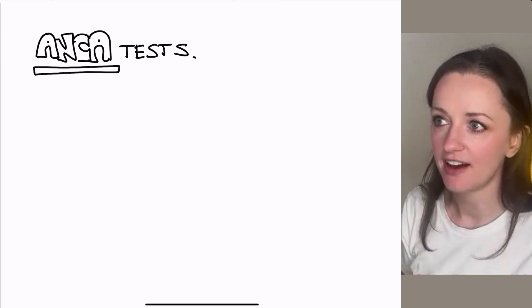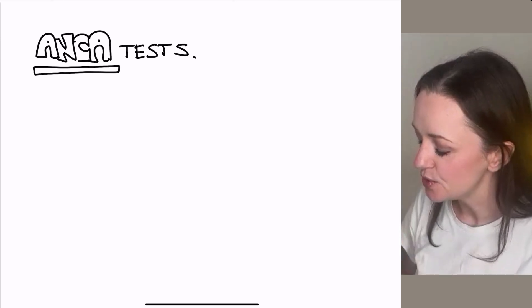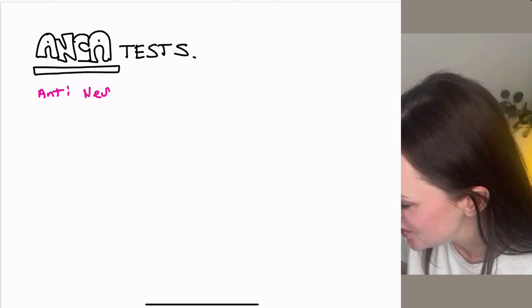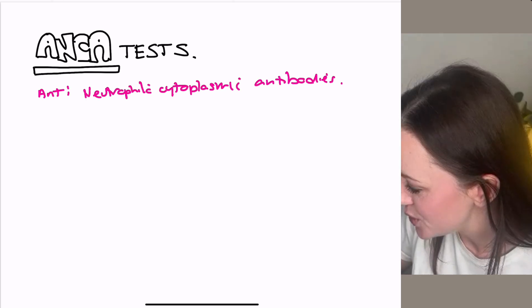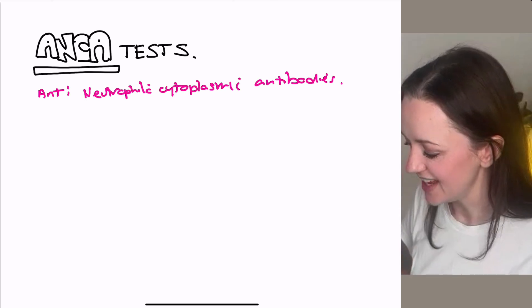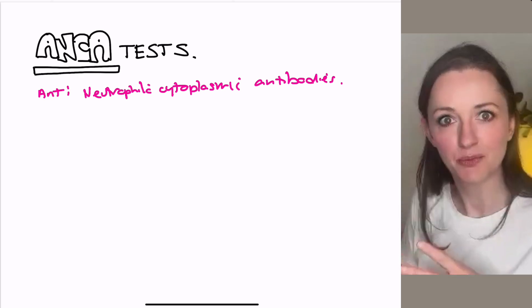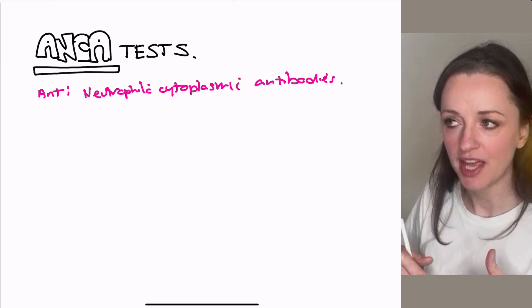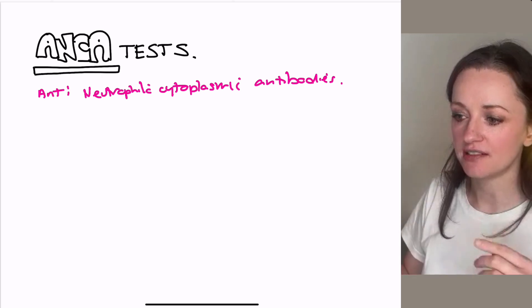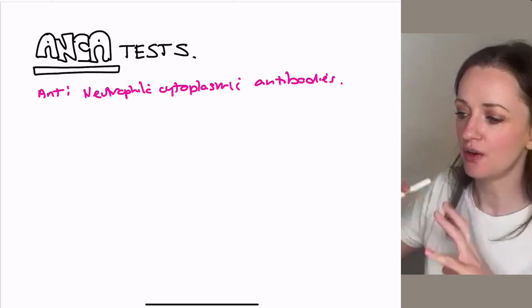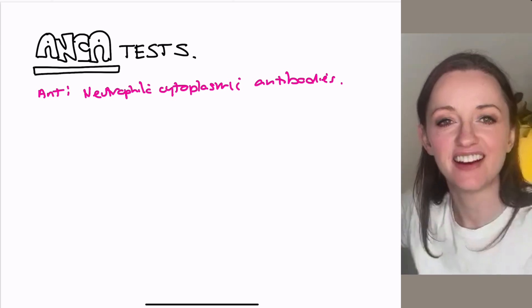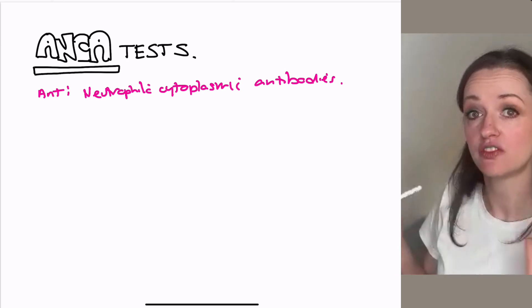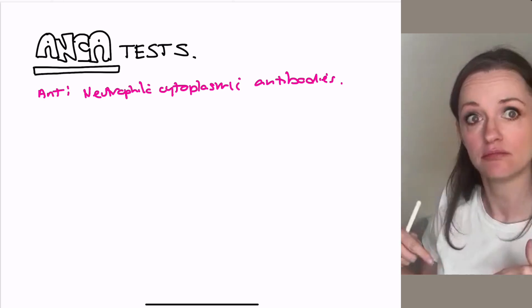When it comes to ANCA vasculitis, ANCA stands for anti-neutrophilic cytoplasmic antibodies. It's really just saying there are antibodies against something that normally lives inside the neutrophil. The immune system doesn't find it inside the neutrophil — it'll find it when the neutrophil throws it out during an immune response on its nets. But when the neutrophil is calm, these things are living inside the neutrophil.